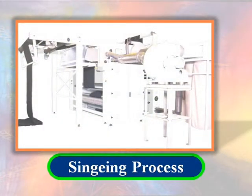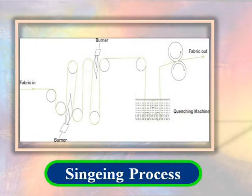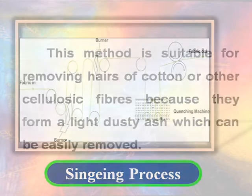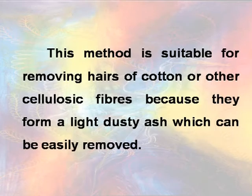Singeing removes the surface hair of woven cotton fabric by passing them at great speed through a naked flame, so that the surface fibers or hair are burnt away. This method is suitable for removing hair of cotton or other cellulosic fibers because they form a light dusty ash which can be easily removed.